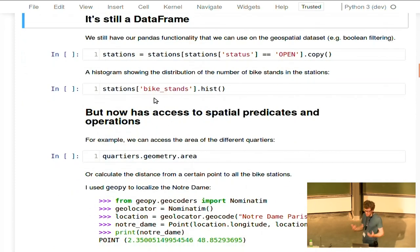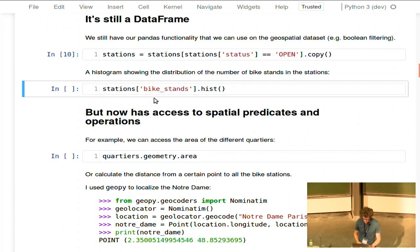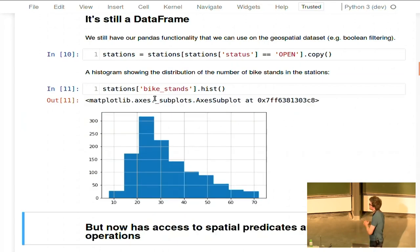It's still a data frame, so although it's now a geo data frame, all the things that you know of Pandas, you can still do. For example, I filter here, I have some boolean filtering, so I only take those stations which are open, and I can, for example, of the bike stands, make a histogram where you see a distribution of how many bike stands are there at each station of bikes.